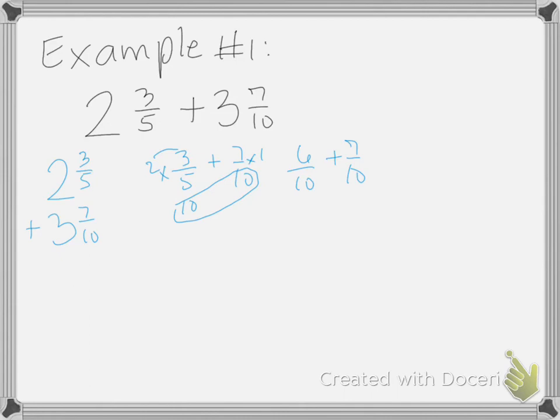So now I'm going to rewrite the fractions using the like denominators. That is going to be 2 6/10 plus 3 7/10. Let's go ahead and add 7 plus 6. That's going to be 13/10 and 2 plus 3 is going to be 5. At this point we realize that 13/10 is an improper fraction, so we can break this.